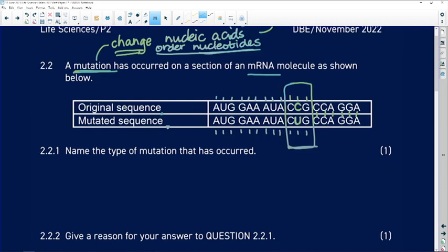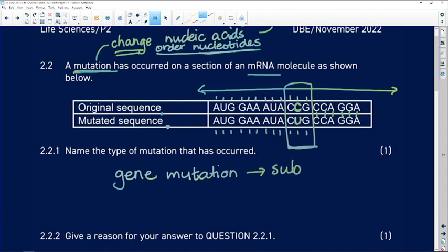The mutation that occurs in one gene, we call a gene mutation. And the particular kind of gene mutation that we're seeing here is substitution of uracil for cytosine. So it's a gene mutation of the substitution kind.